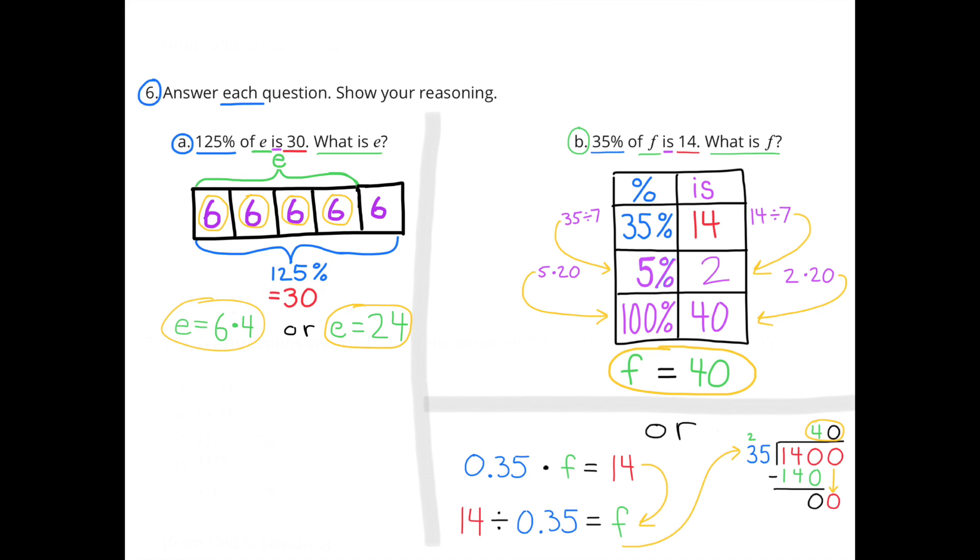B. 35% of F is 14. What is F? I drew a different diagram here. On the left-hand column, I have the percentage. On the right-hand column, I have the value, or is. 35% is 14. That's what they told us.